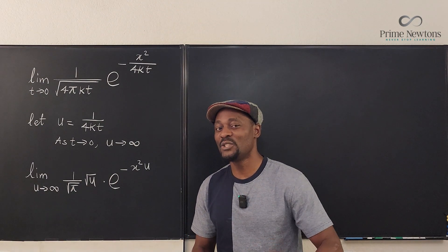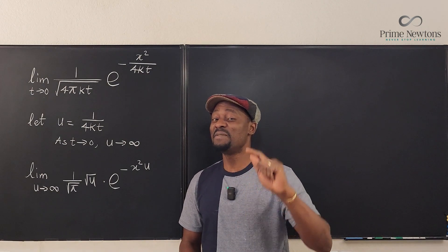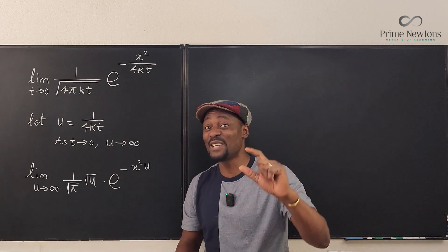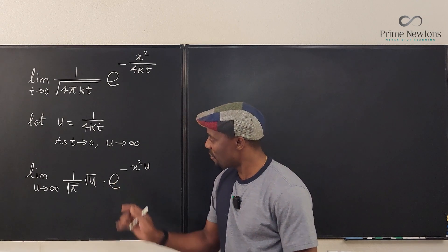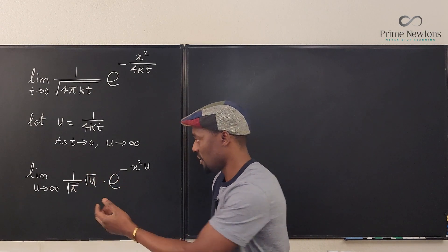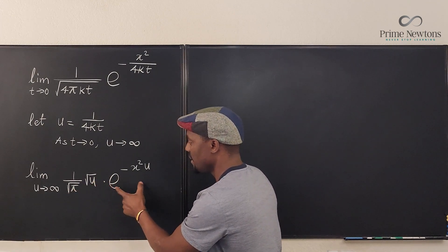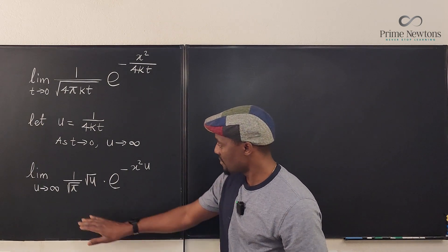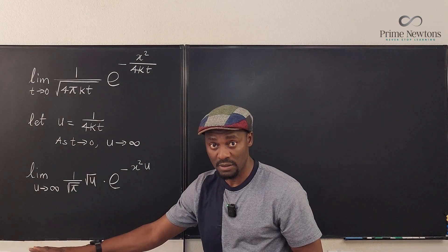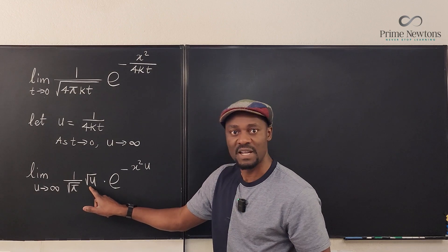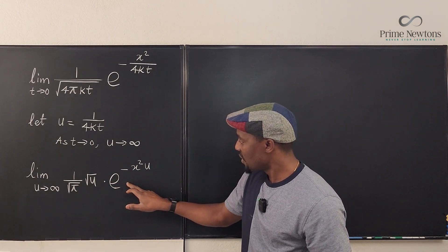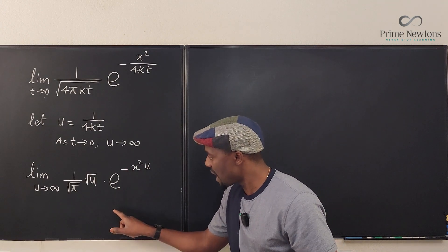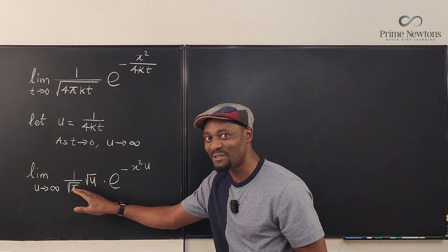Remember: you cannot use L'Hôpital's rule unless you have zero over zero or infinity over infinity. Do not just place terms however you like — it must be one of those two forms. We have two functions of u here. One over the square root of π is a constant, but the square root of u goes to infinity. Meanwhile, e to the negative x squared u goes to zero as u goes to infinity.